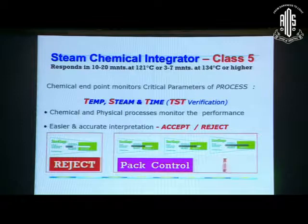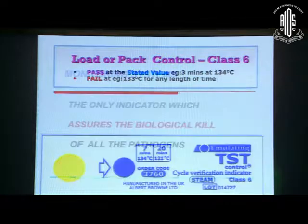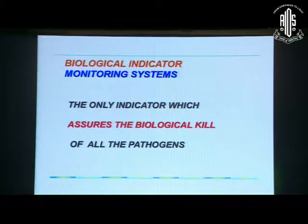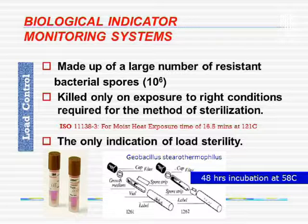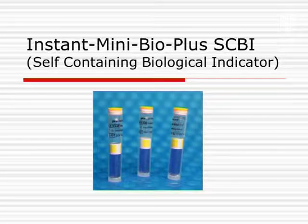Whatever said and done, the biological indicator is the best indicator. It practically kills one million spores and tells you whether your autoclave has worked well. The problem is that to get a result, you have to culture the spores, which takes 48 hours — meaning you have to wait 48 hours before using the sterilized pack. Now we have the instant mini BioPlus indicators, which give a result within 40 minutes.